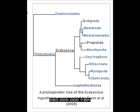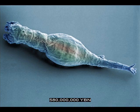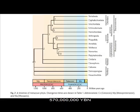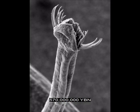Protostomes lophotrochozoa evolve — ancestor of all brachiopods, bryozoans, and mollusks. Bilaterians deuterostomes evolve — ancestor of all echinoderms, hemichordates, and chordates. Bilaterians chaetognatha evolve — arrowworms. Earliest teeth — animals start to eat each other. The evolution of teeth and animal predation starts an arms race that rapidly transforms ecosystems around the Earth.